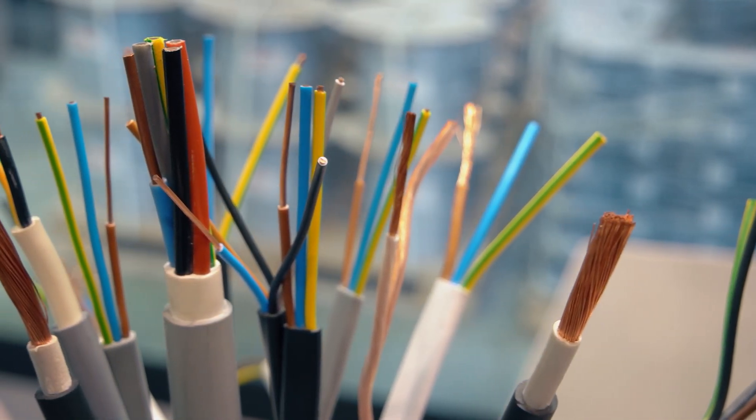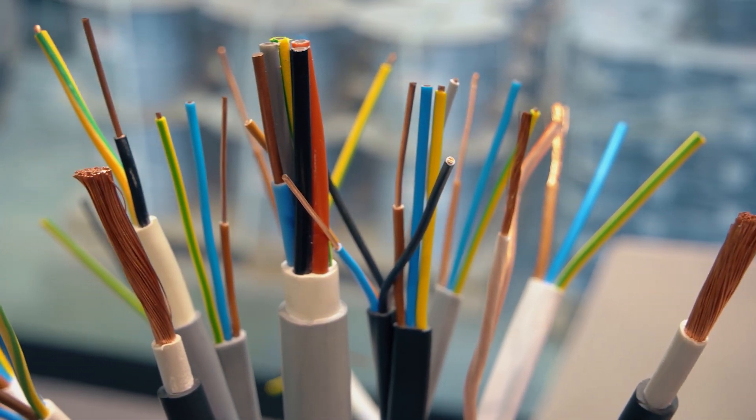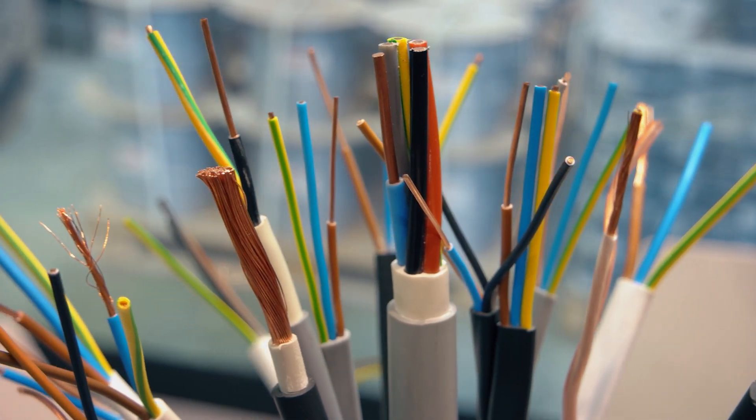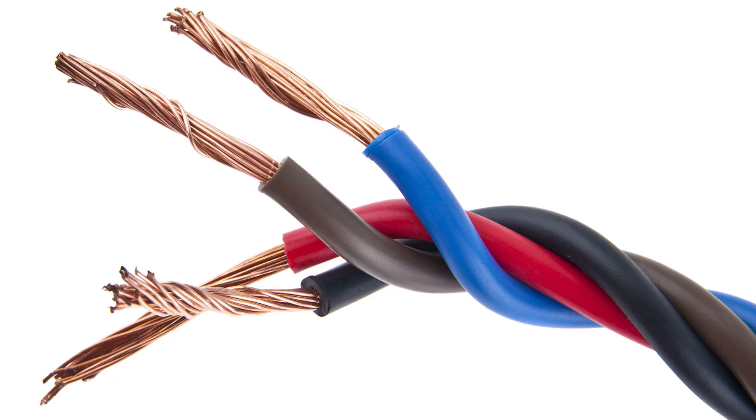One property of materials is whether they allow electricity to flow through them. A material that allows electricity to flow through it, like the copper used to make wires, is called an electrical conductor.